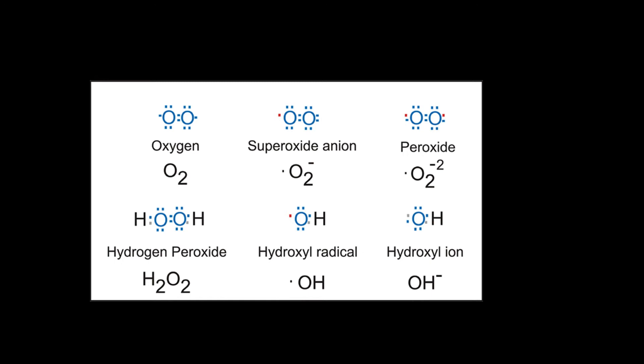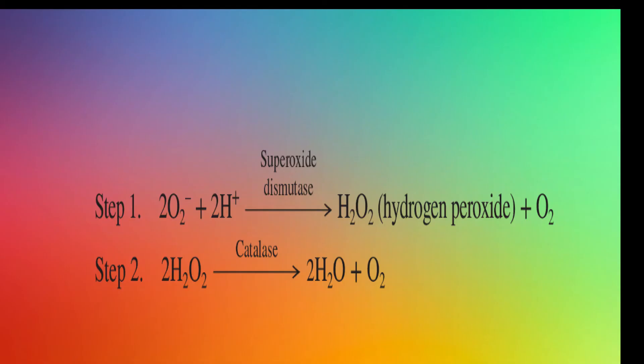Organisms that produce ATP aerobically must have a way to neutralize these reactive oxygen species. They produce neutralizing enzymes including superoxide dismutase and catalase. Superoxide dismutase converts superoxide to hydrogen peroxide and oxygen. Catalase converts hydrogen peroxide to water and oxygen.